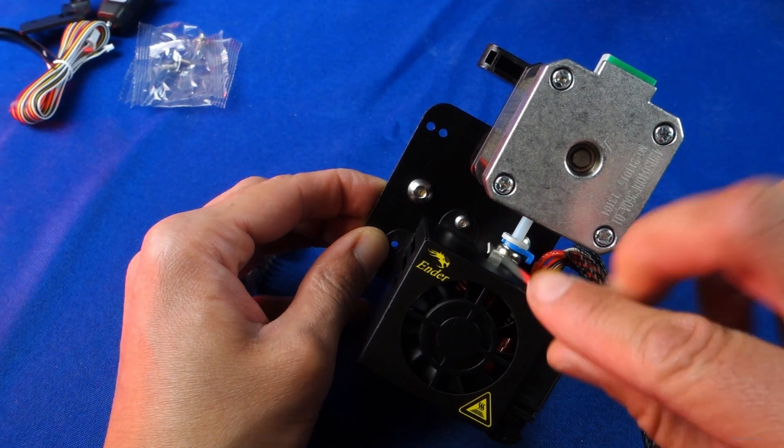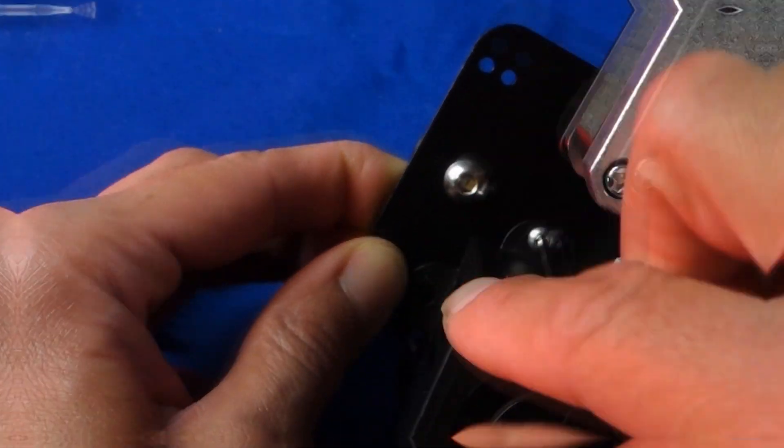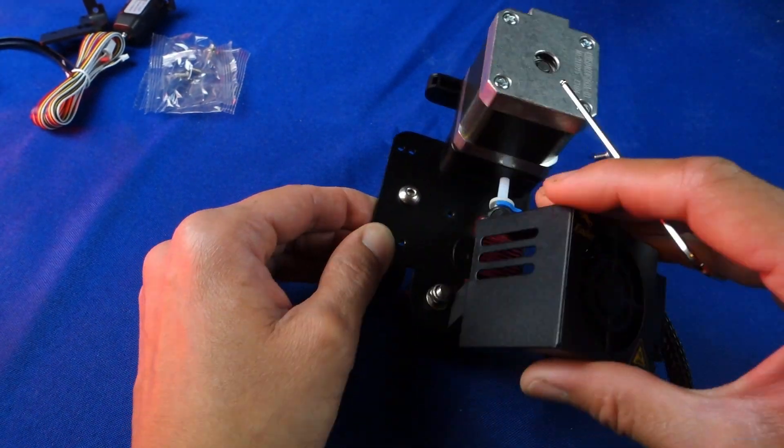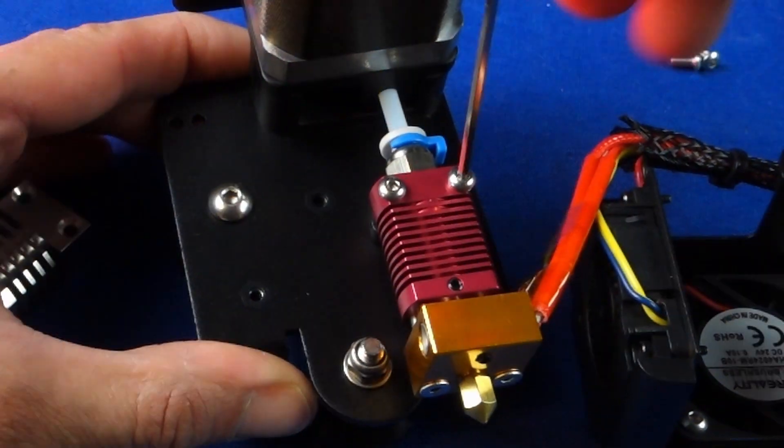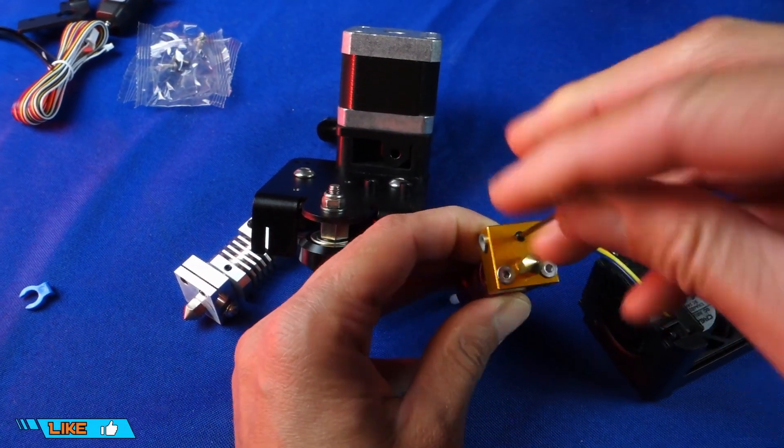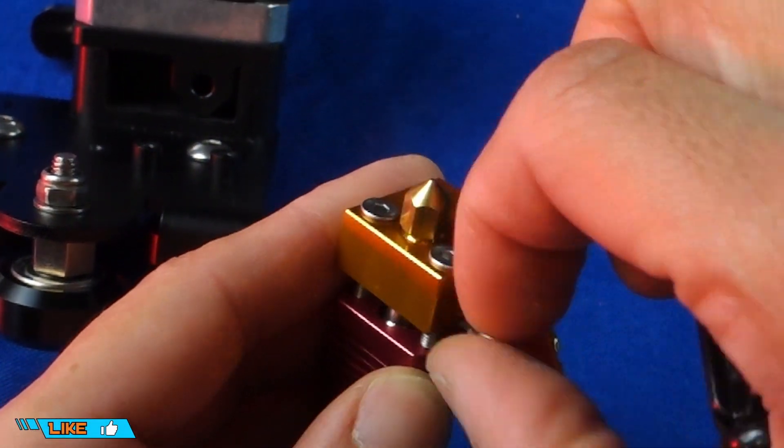Next we will take a look at upgrading the hotend itself by replacing it with the Micro Swiss all metal hotend kit. This version in particular is designed to work with Creality printers because of where the two top screws are located. After removing the hotend assembly cover we will carefully remove the thermistor and heater cartridge since we will be reusing these.